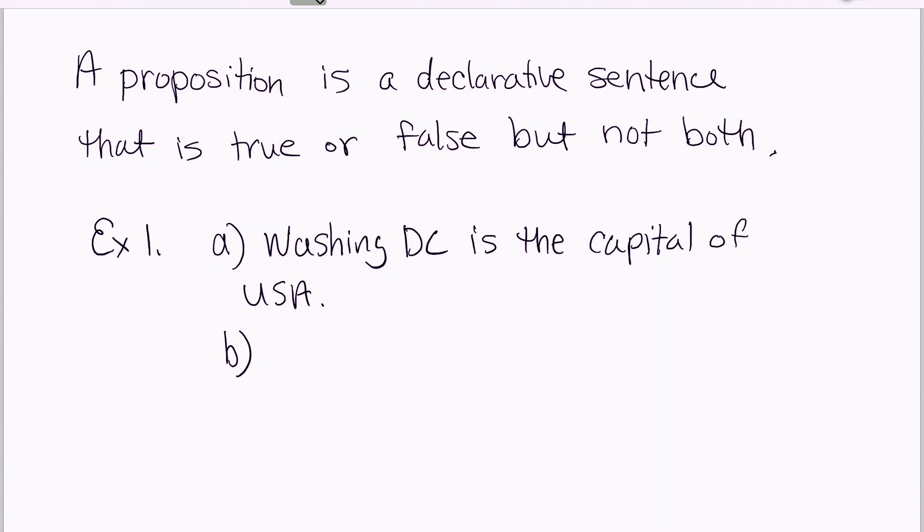A second example of a proposition would be Toronto is the capital of Canada. So this is stating a fact. This is a declarative sentence because it's stating a fact. However, the truth value would be false.